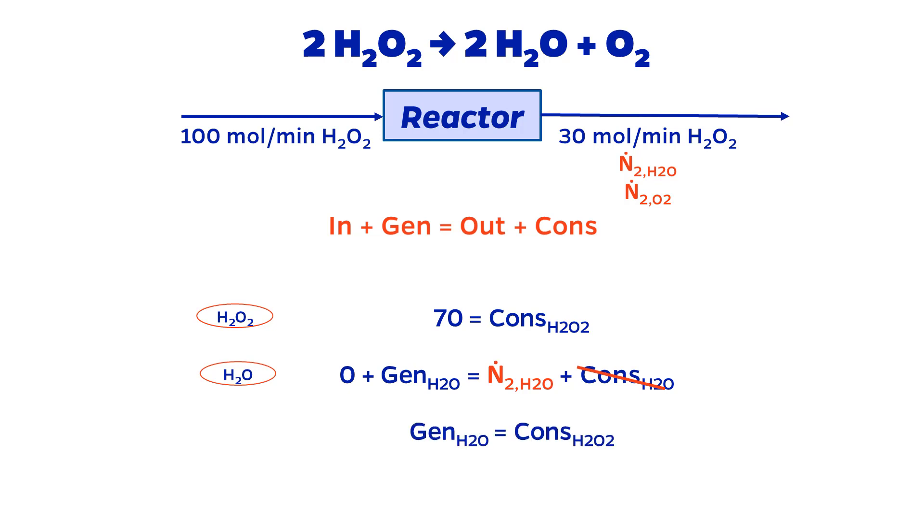Recall that earlier I looked at the stoichiometry and concluded that the generation of H2O is equal to the consumption of H2O2. Therefore, the moles of H2O coming out is 70 moles per minute.